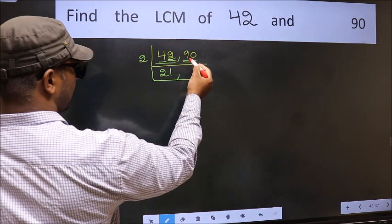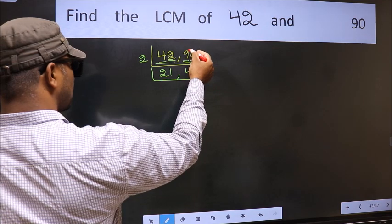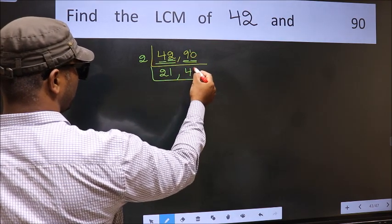First number 9, a number close to 9 in 2 table is 2 times 4 is 8. 9 minus 8 is 1, 1 carried forward is 10. When do we get 10 in 2 table? 2 times 5 is 10.